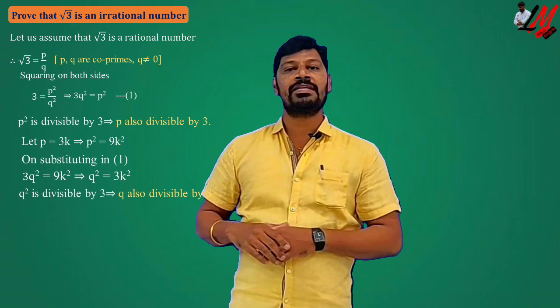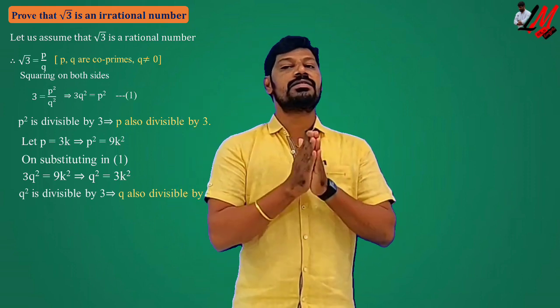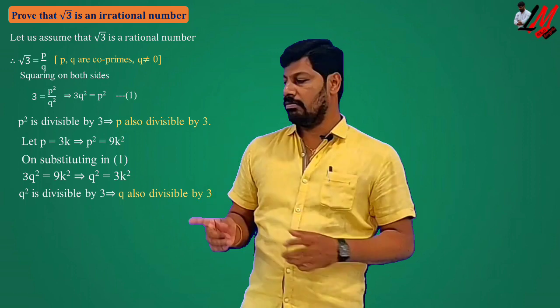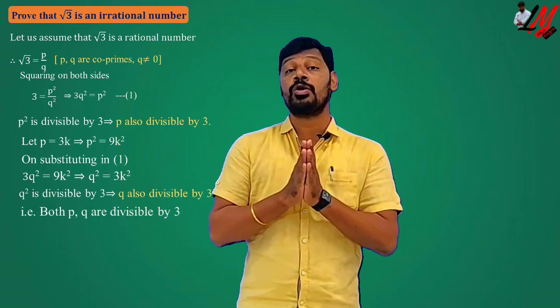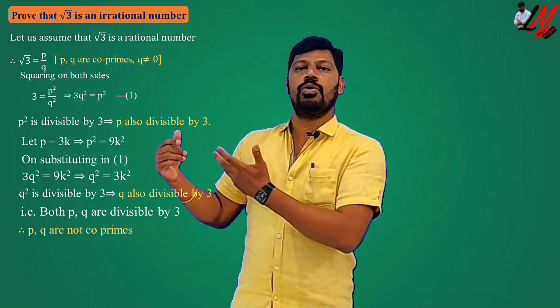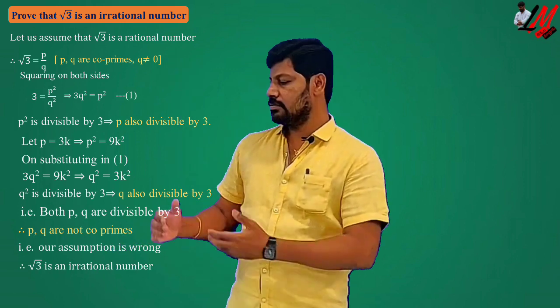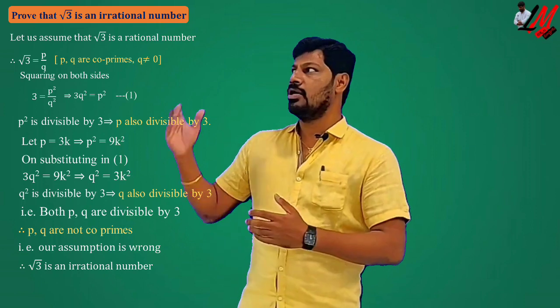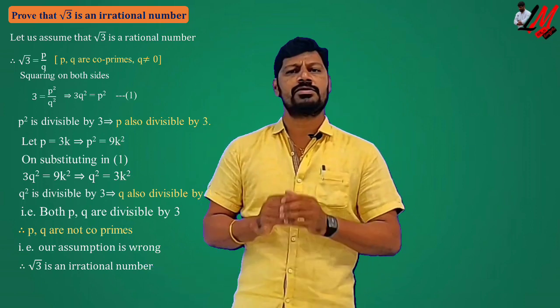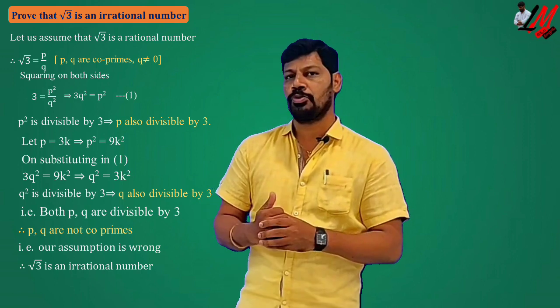If we observe this entire process, we got that p is divisible by 3 and q is also divisible by 3. But in the second step we mentioned that p and q are co-primes — meaning they have no common factor other than 1. Here both p and q are divisible by 3, which means p and q are not co-primes. Therefore our assumption is wrong. Since we assumed root 3 was rational and reached a contradiction, root 3 is an irrational number.